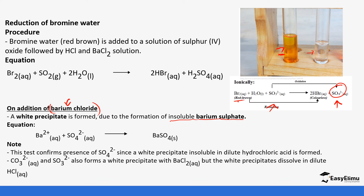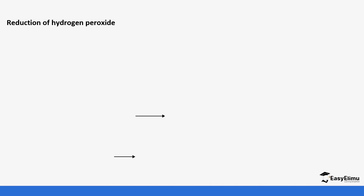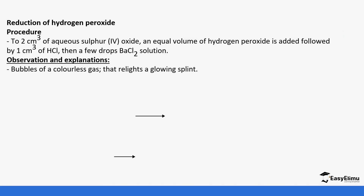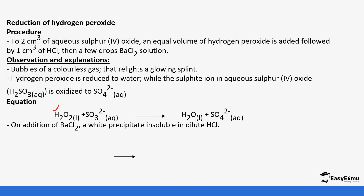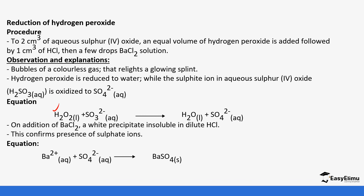Sulfur dioxide also reduces hydrogen peroxide — you will see bubbles of colorless gas, and this gas relights a glowing splint, confirming it is oxygen. The sulfurous acid is oxidized to sulfuric acid, or the sulfite ions are oxidized to sulfate ions, as shown in the equation. The hydrogen peroxide is broken down to form water and oxygen. If barium chloride is added to this reaction, the barium ions react with the sulfate ions to form barium sulfate — a white precipitate — confirming that sulfate ions are present.